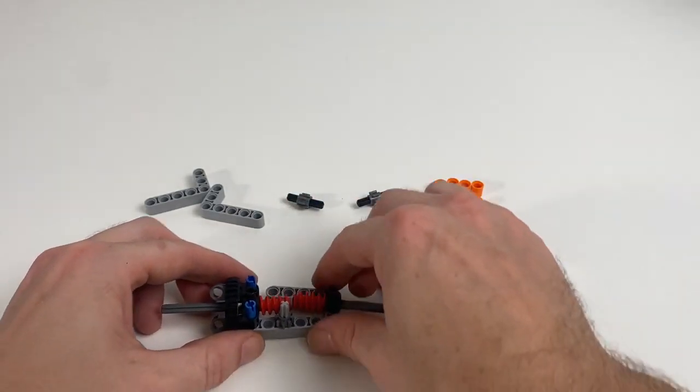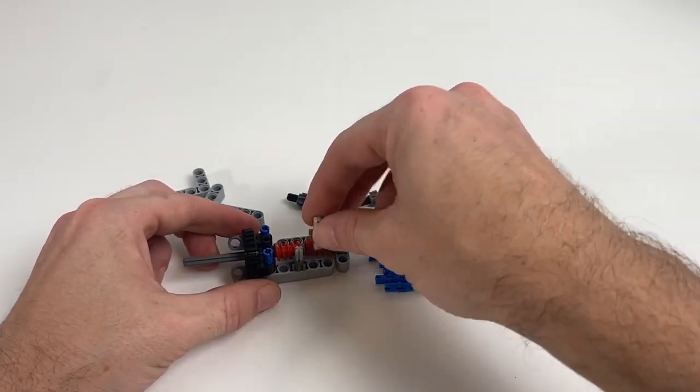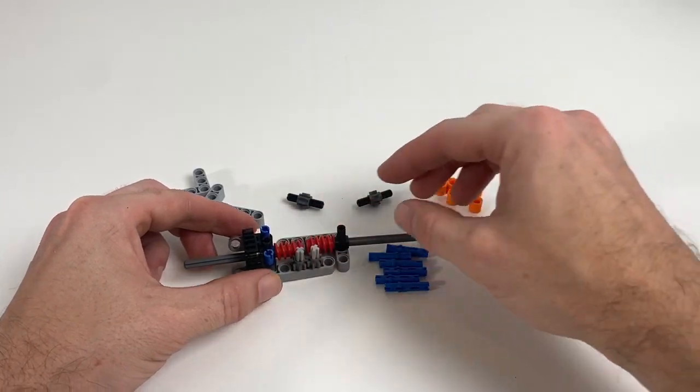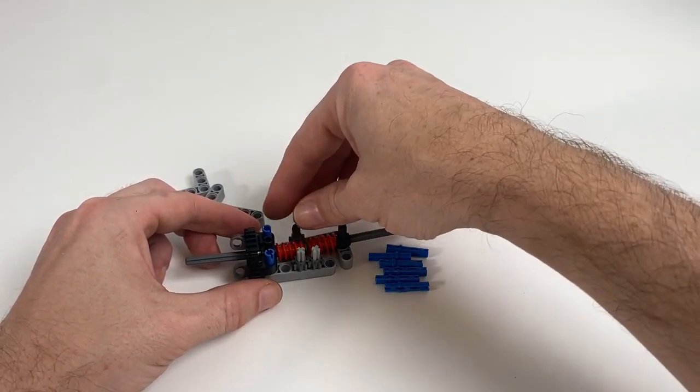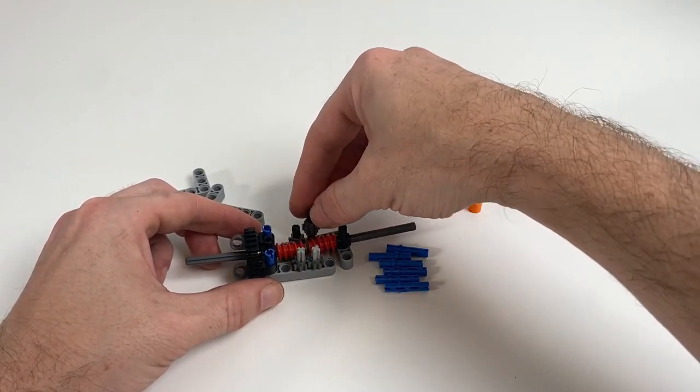This is really the only part of the build process you need to pay a little bit more attention to. You just need to make sure that these gears go in the right place - need one above, one below each of the worm gears.